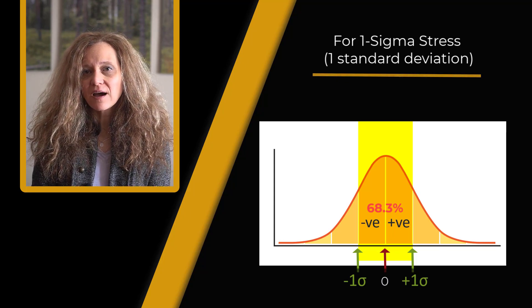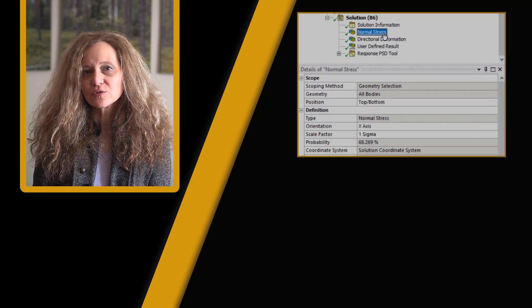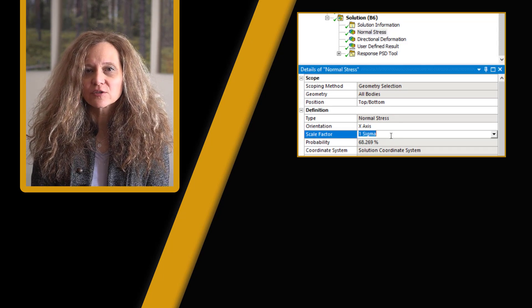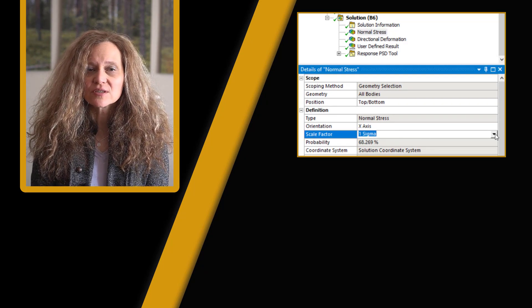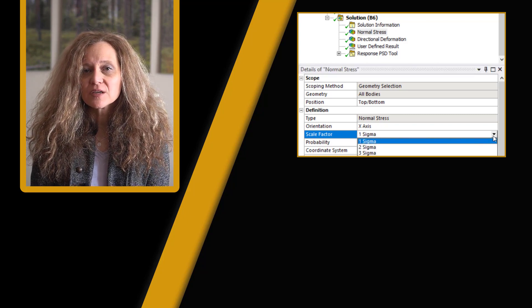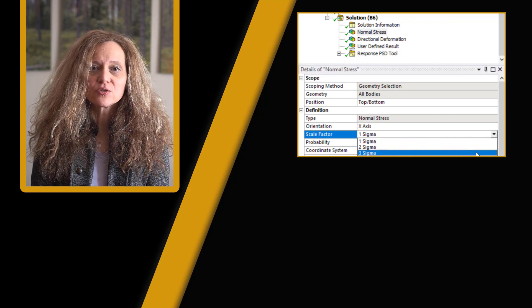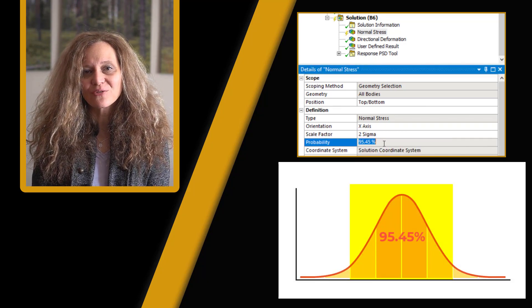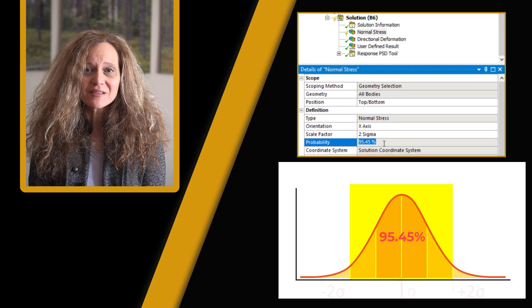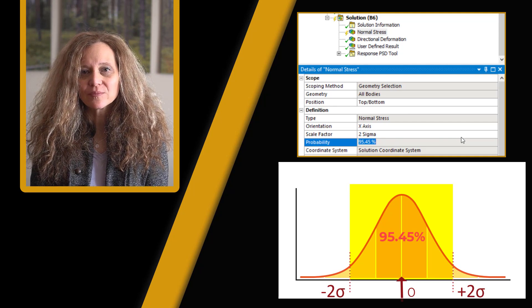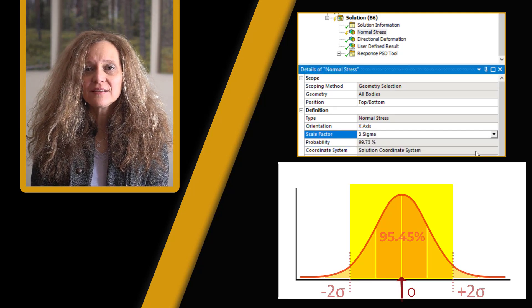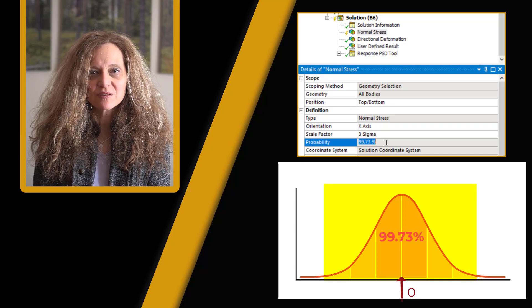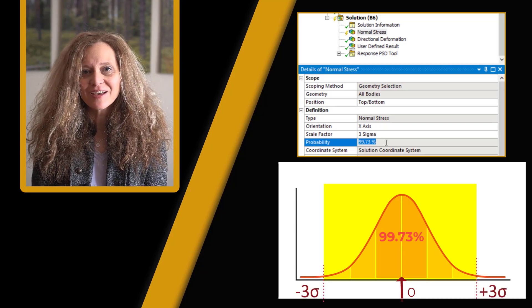For higher confidence, ANSYS Mechanical gives an option to choose a scale factor and we can increase the scale factor to any value such as 2 or 3 sigma. So if we increase it to 2, then 95.45% of random response will be between zero and 2 sigma value. And if we increase it to 3, 99.73% of random response will be between zero and 3 sigma values.